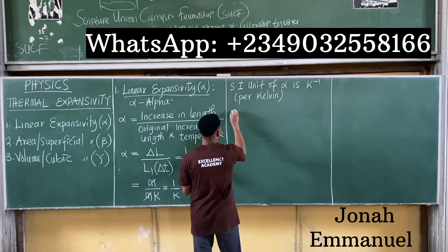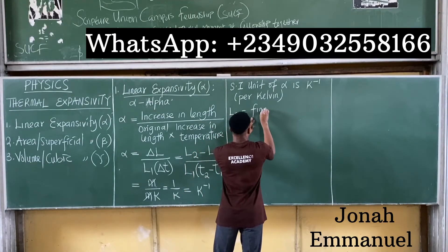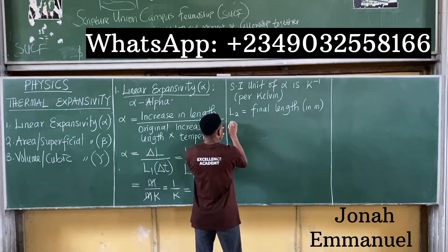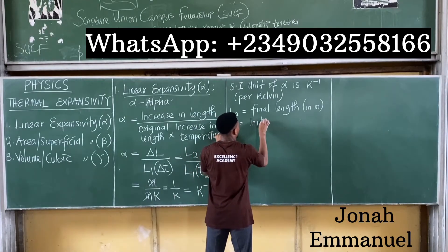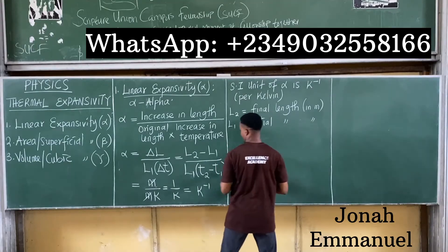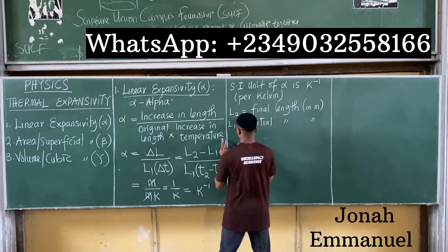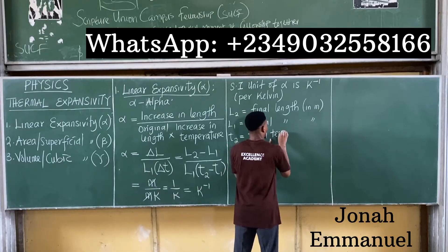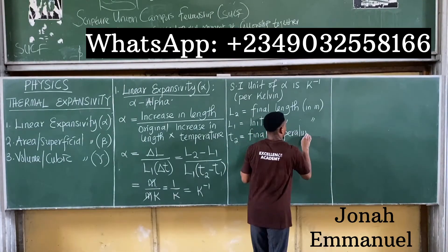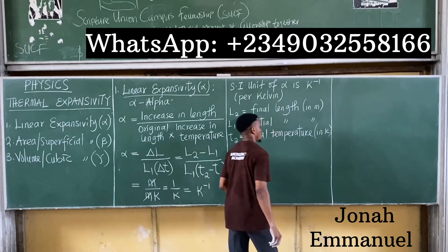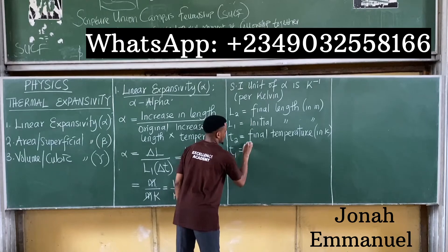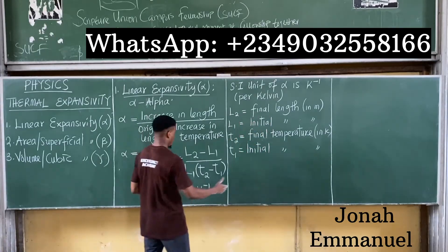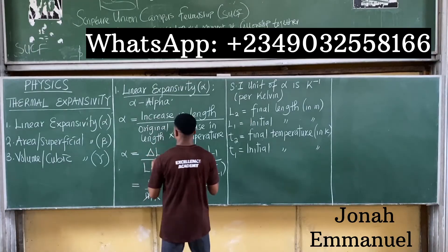Let's define the terms. L2 is the final length, in meters. L1 is the initial length, in meters. T2 is the final temperature, measured in Kelvin. T1 is the initial temperature, in Kelvin. So that is basically the concept of linear expansivity. We'll now solve some problems involving linear expansivity.